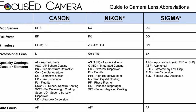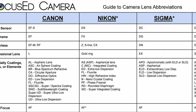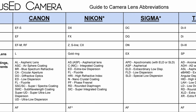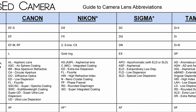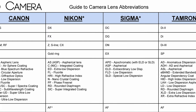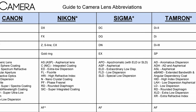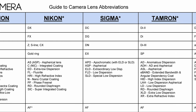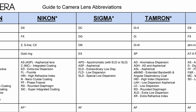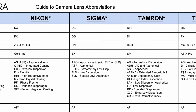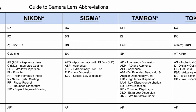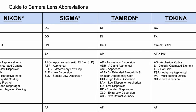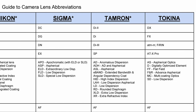If you need more than just the basics, be sure to check out the resources in the description below. There you will find a chart with a list of abbreviations for Canon and third-party manufacturers like Tamron, Sigma, and Tokina. You can download this and lots of other cool content too.